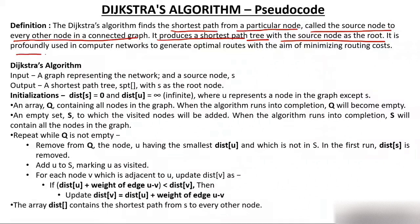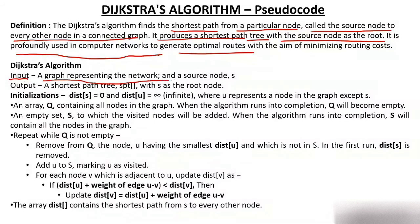Dijkstra is profoundly used in computer networks to generate the optimal route. Whenever a company like Vodafone is establishing telephone lines or internet lines, they always look for a minimum path — and for that they can use Dijkstra's method. The input is a graph representing a network and a source node S. The output will be a shortest path tree where S is the root.